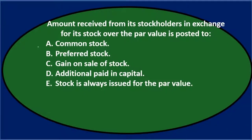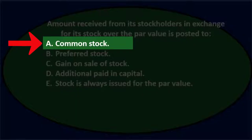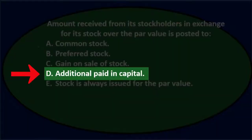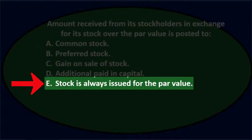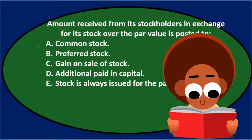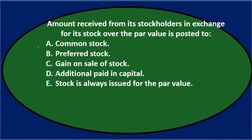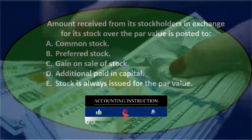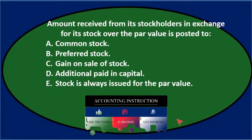Next question: the amount received from stockholders in exchange for its stock over the par value is posted to — A) common stock, B) preferred stock, C) gain on sale of stock, D) additional paid-in capital, E) stock is always issued at the par value. Let's go through this with the process of elimination. We're receiving something from stockholders in exchange for stock — we sold stock and got money over the par value.